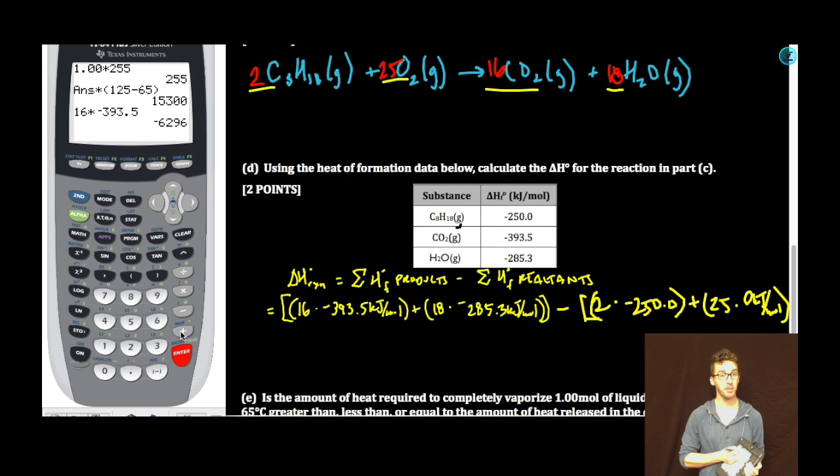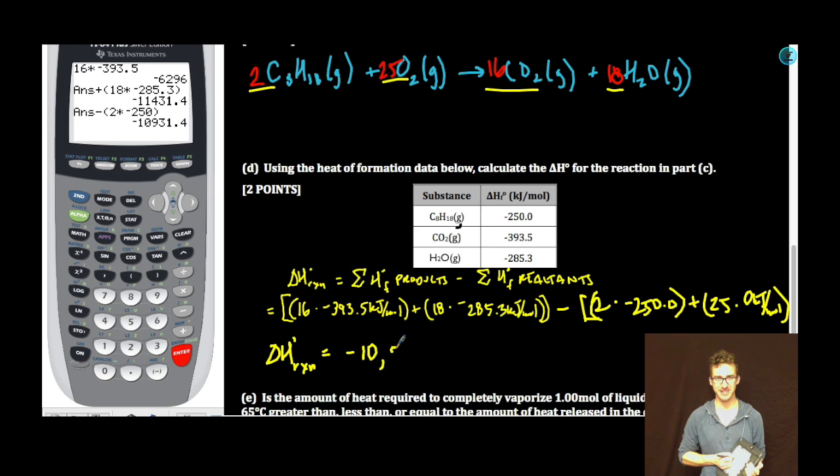Calculator: 16 times negative 393.5, plus 18 times negative 285.3, minus 2 times negative 250. Delta H is equal to negative 10,931.4 kilojoules per mole of reaction.